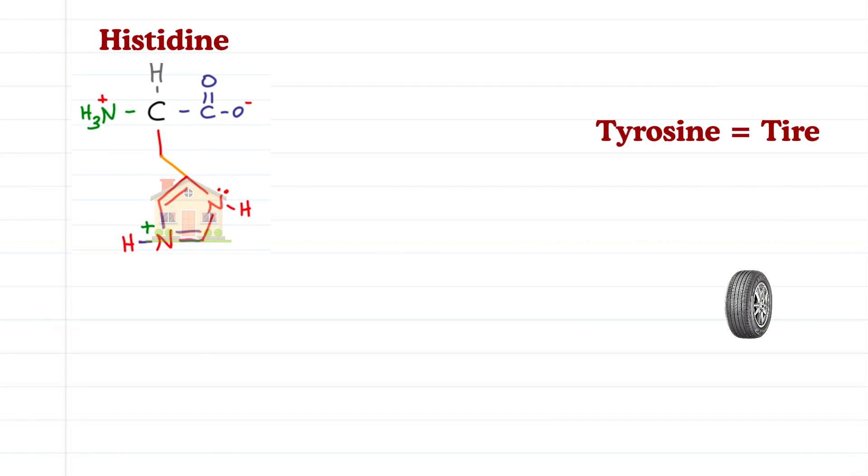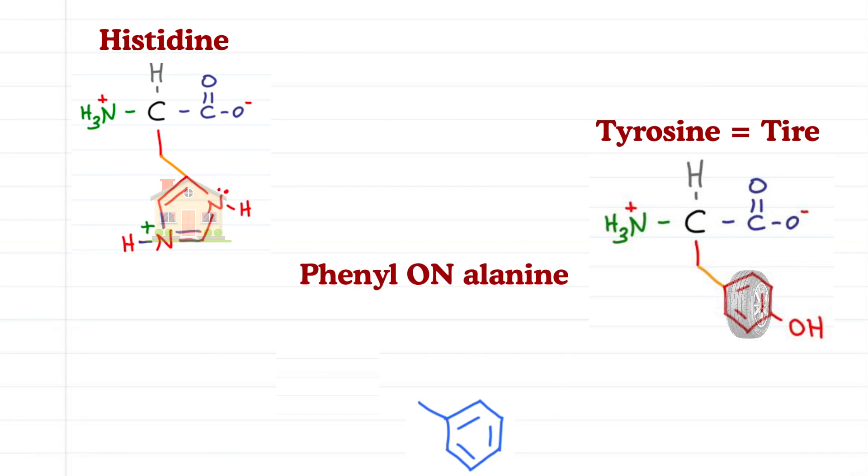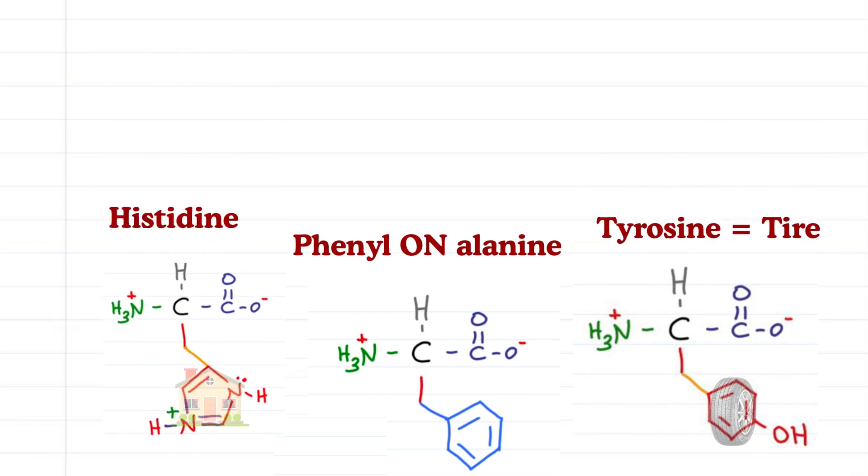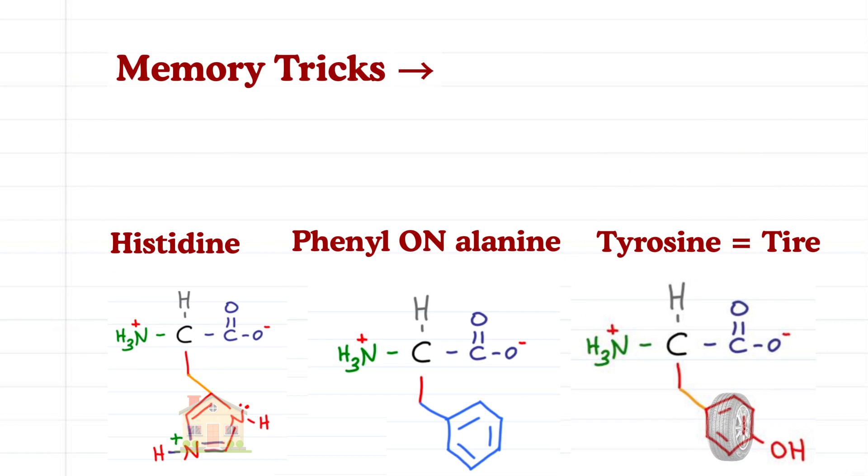A histidine house, a tire in tyrosine, phenyl-on-alanine, these are just some of the memory tricks you're about to learn to help you finally know the 20 common amino acids and their side chains.